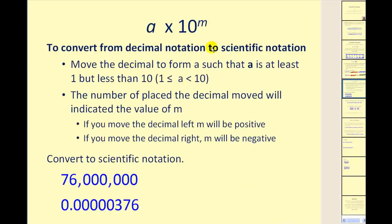Next we'll convert a number in decimal notation to scientific notation. The steps are: move the decimal to form a such that a is at least one but less than 10. The number of places the decimal moves indicates the value of m. If you move to the left, m is positive; if you move to the right, m is negative. We want to make sense of this, not just memorize it. First, determine where the decimal should be so that a is at least one but less than 10.